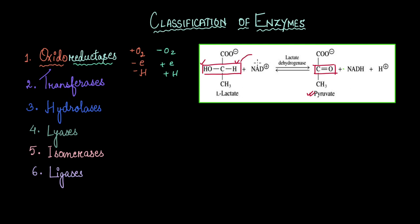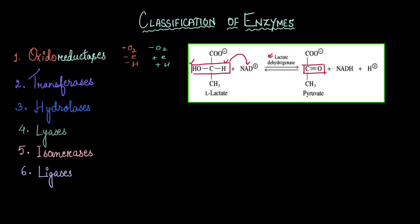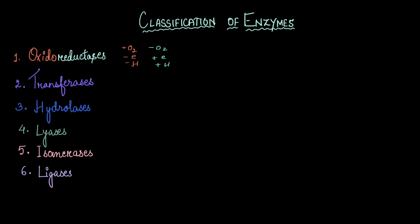This lactate gives away both its hydrogens and forms a double bond with the oxygen molecule. The molecule that finally forms is pyruvate. It gives away both these hydrogen molecules to NAD+, which is a cofactor or electron carrier. What's important is that lactate here is getting oxidized by giving away both its hydrogens, and NAD+ which is accepting those hydrogens is getting reduced. Any enzyme that catalyzes such a reaction where both oxidation and reduction are taking place is classified under oxidoreductases. So the enzyme here, lactate dehydrogenase, is grouped under oxidoreductases.